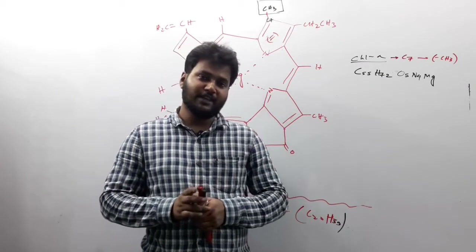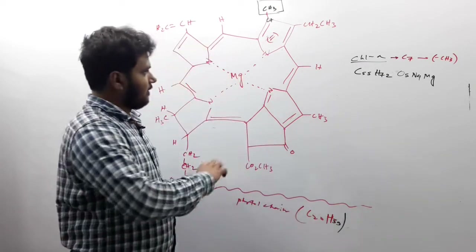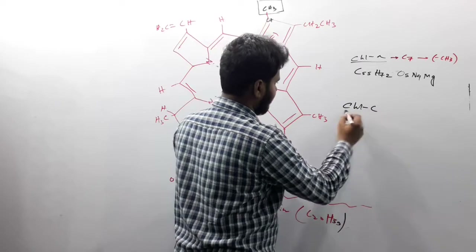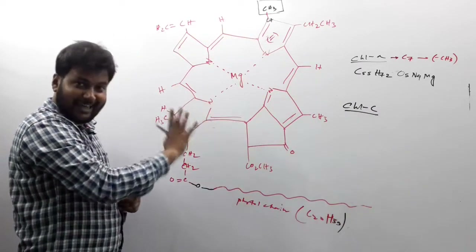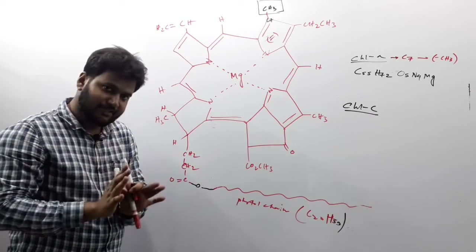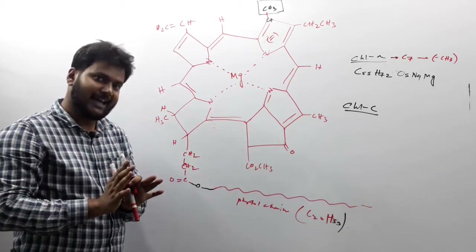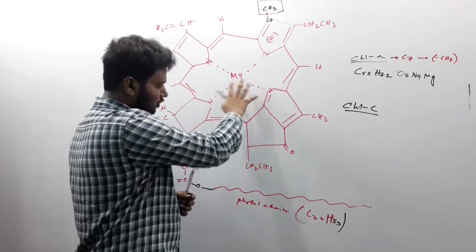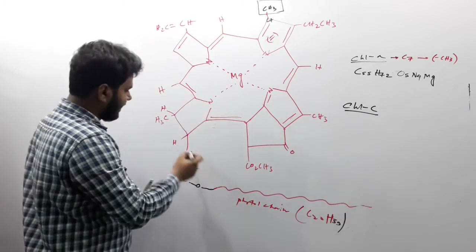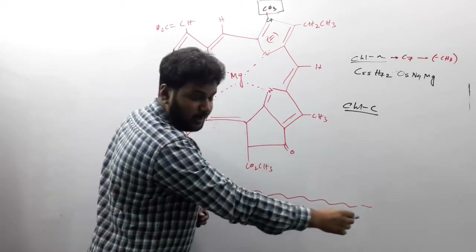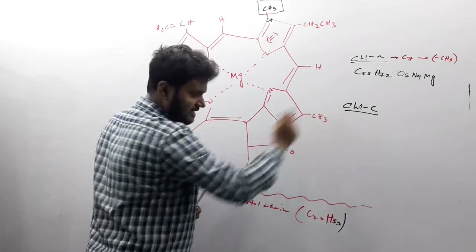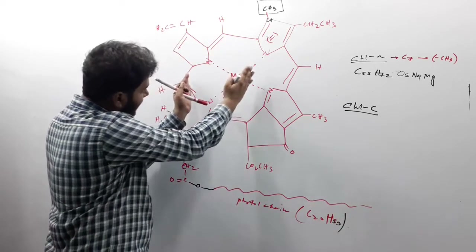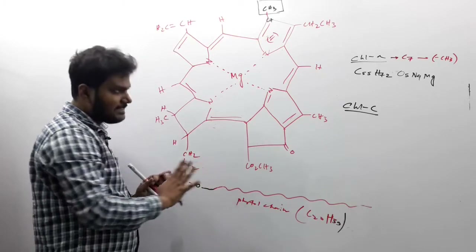Now let us discuss about chlorophyll C. This is chlorophyll C, and this is the structure of chlorophyll A. We will see the difference between chlorophyll A and C. Chlorophyll A has two parts: one is the head part, and one is the phytol tail chain part. Chlorophyll C is an unusual type — the head part remains as it is, but the tail part is absent.